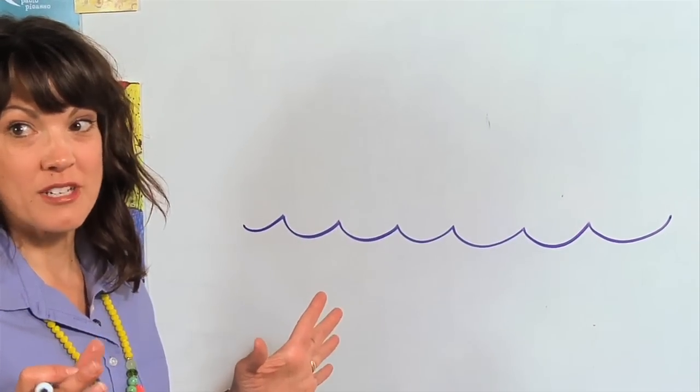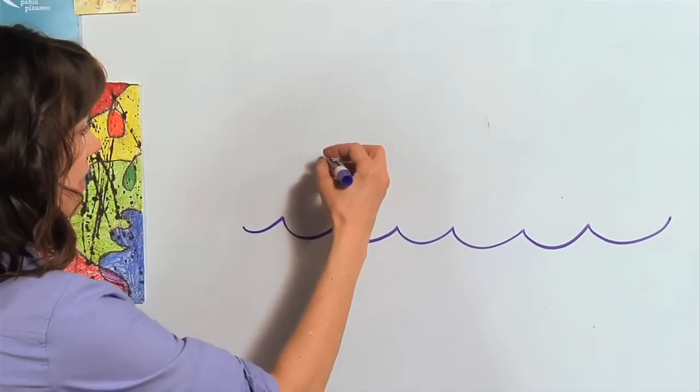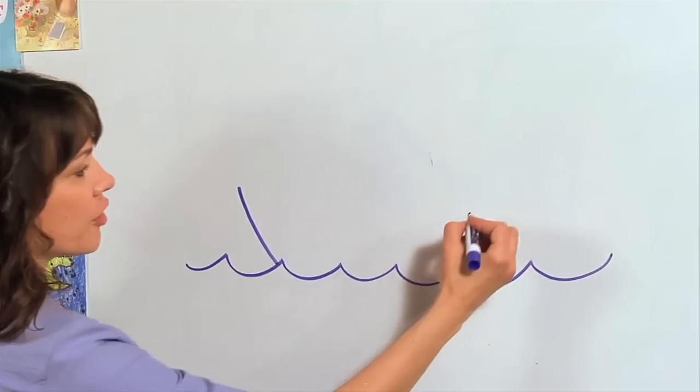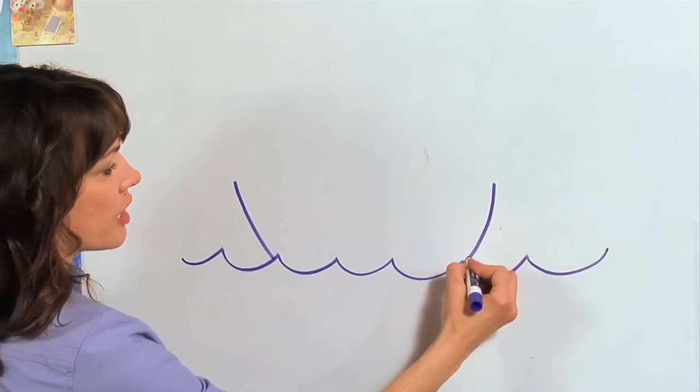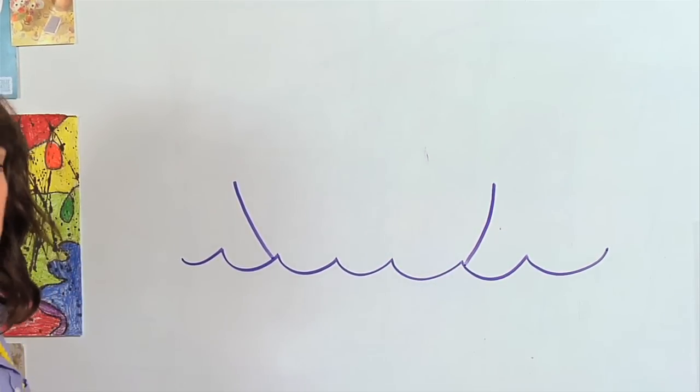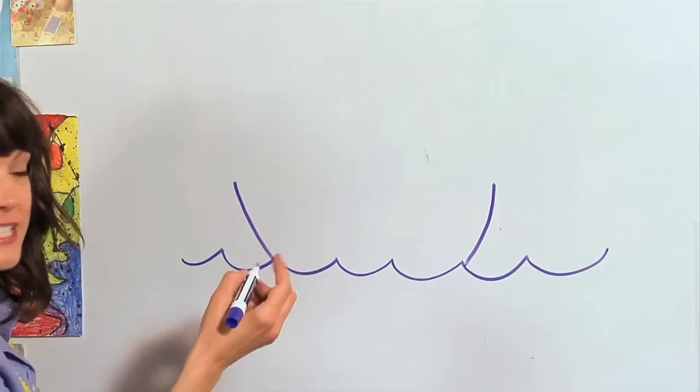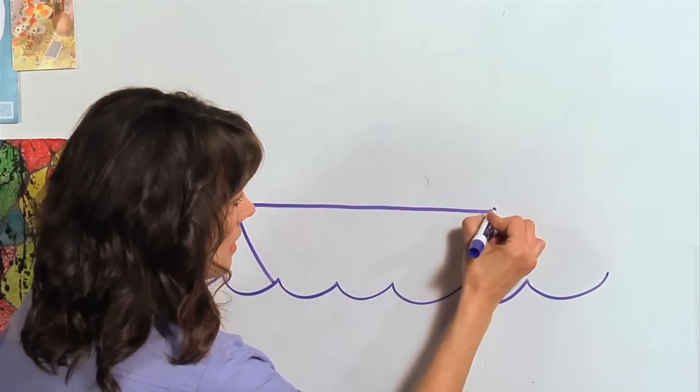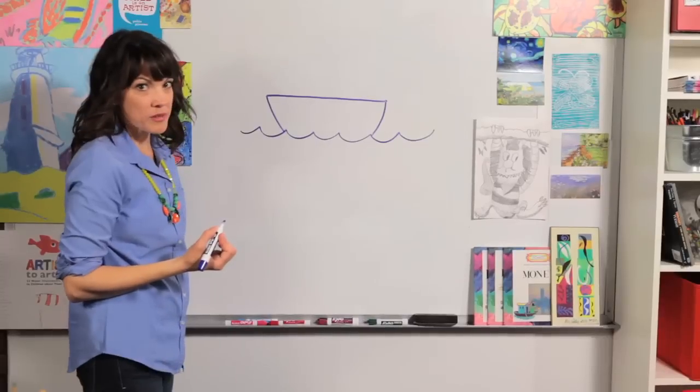Now we're ready for our boat. It is really simple if you just draw a curved line until you touch your water and then another curved line on this side until you touch your water. And then we're just going to draw a straight line across connecting. And this is the body of our boat.